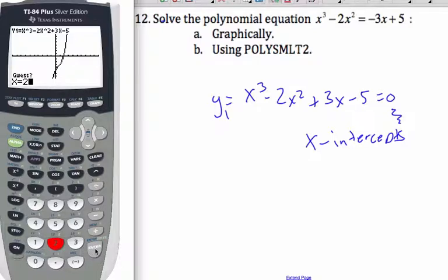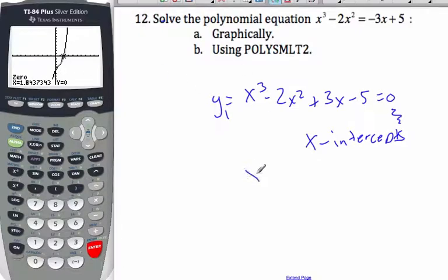Well, I think it's about two, so I'll hit two, and there is my zero. So this particular one has only one answer and it's x equals 1.84 to three significant figures.